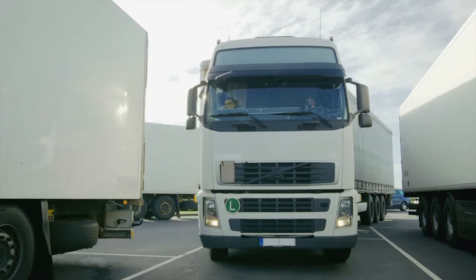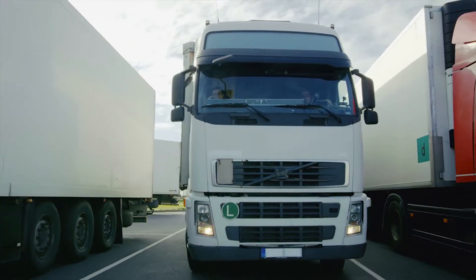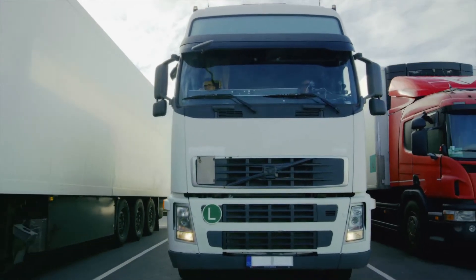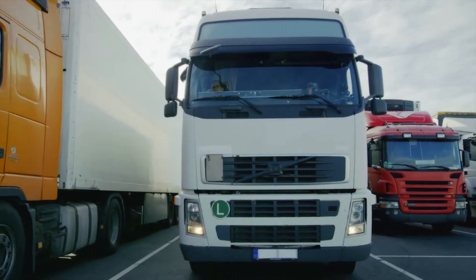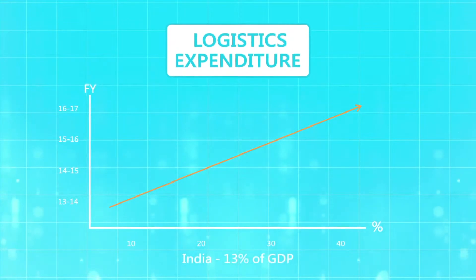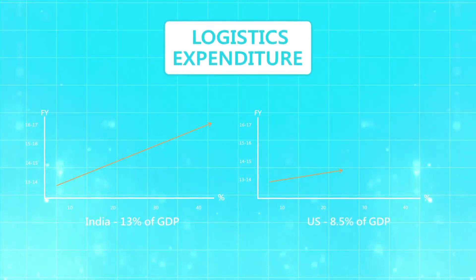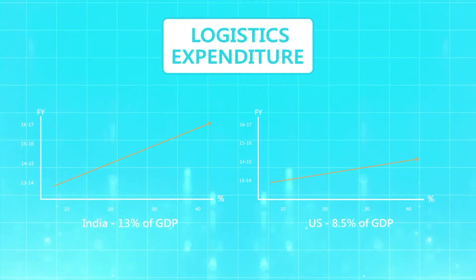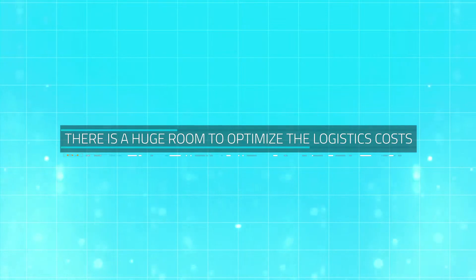Over the years, the transport and logistics industry has had incremental innovation and improvements. However, India's logistics industry has a lot of inefficiencies. In India, the logistics expenditure is 13% of GDP, whereas in the US, the same number is 8.5% of GDP. Hence, there is a huge room to optimize logistics costs in India.